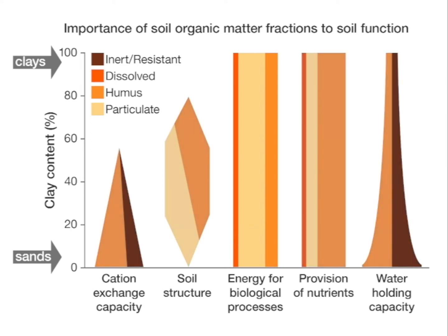So what we're starting to find is you can have two soils with exactly the same total carbon value, but they behave very differently in terms of biological functioning because they vary in their ratios between particulate, humus, and inert organic matter.